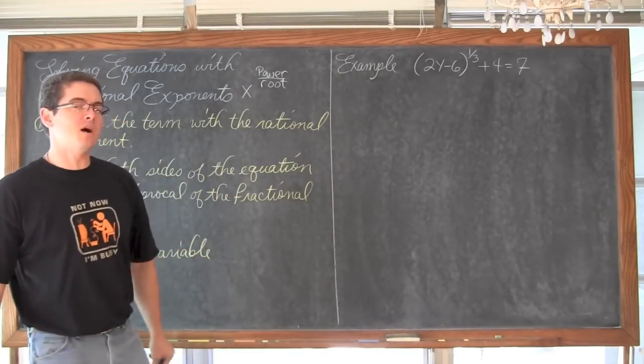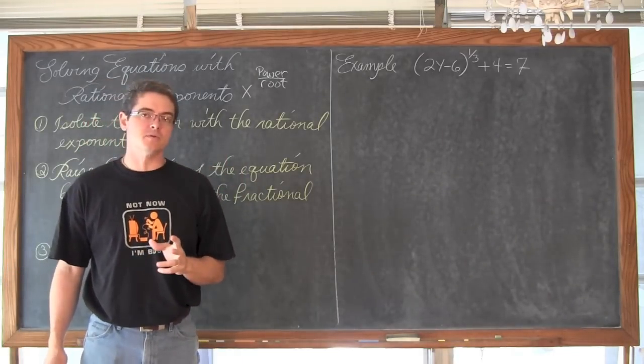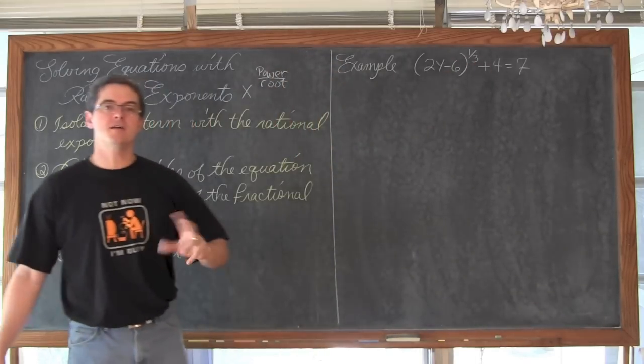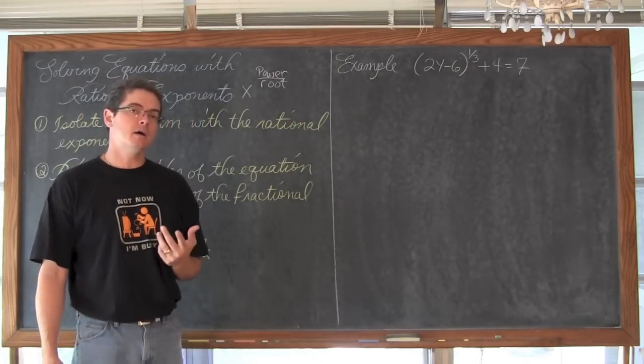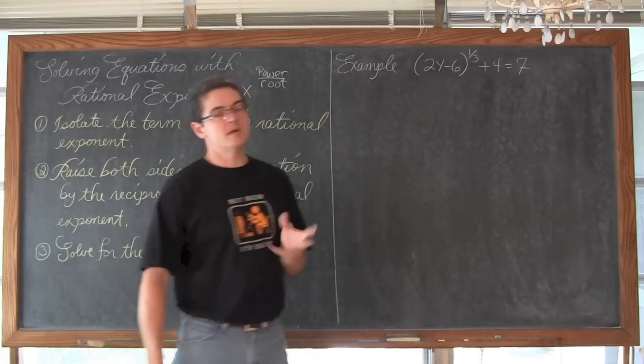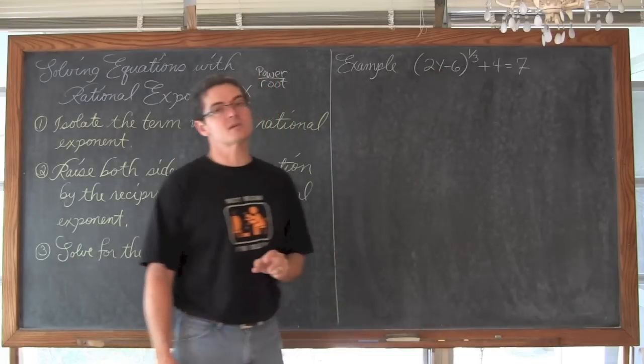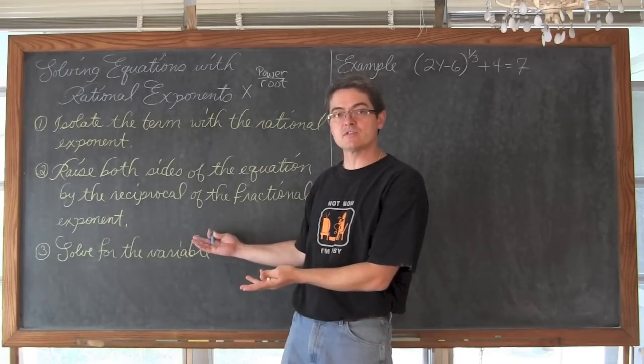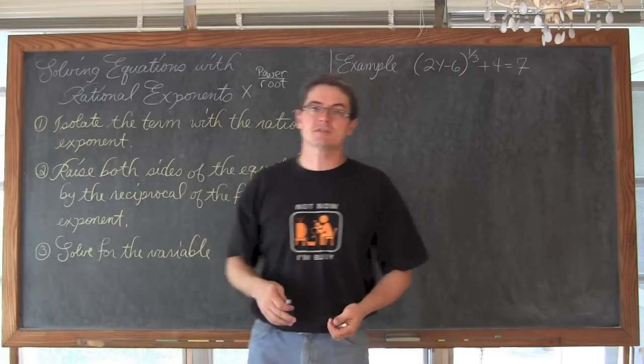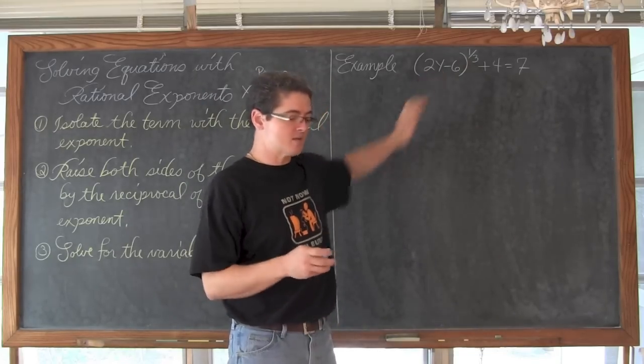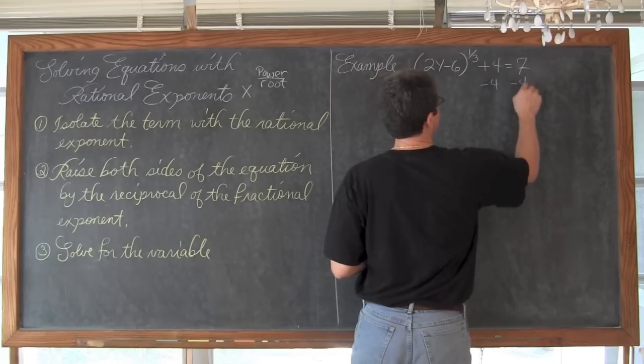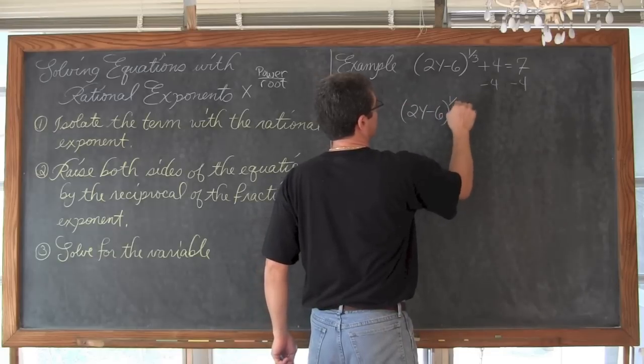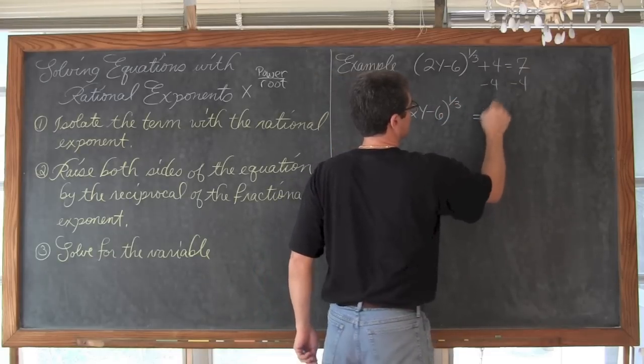For our next example we have 2y-6 to the 1 third power plus 4 is equal to 7. In one way this question is going to be a little bit easier because our powers and roots are both odd. So we don't need to worry about having that positive and negative answer if we bring in our own even root. And a little bit harder because our base is not just a simple monomial. It has two terms. It is a binomial. The subtraction separates the two. The process to solve the question though is the same. I don't have a different set of directions for all of our questions. We are going to follow these three steps for all of them. We are going to isolate that term with the fractional exponent, the rational exponent. We are going to do that by subtracting both sides by 4.